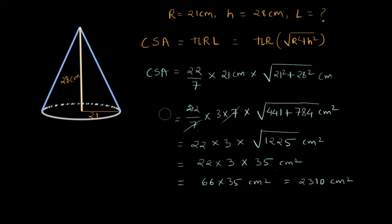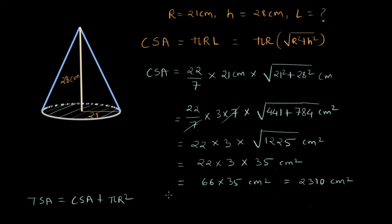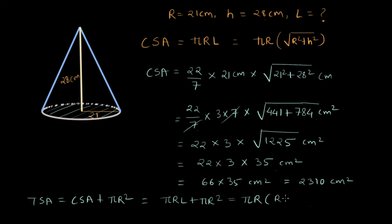Now, if we want the total surface area instead of the curved surface area, TSA = CSA + πr². The extra πr² term accounts for the area of the circular disk at the bottom of the cone. So the TSA formula becomes π × r × l + πr², which factors to πr(r + l).